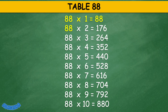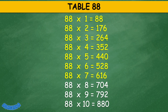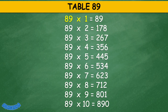Table 88: 88 times 1 equals 88, 88 times 2 equals 176, 88 times 3 equals 264, 88 times 4 equals 352, 88 times 5 equals 440, 88 times 6 equals 528, 88 times 7 equals 616, 88 times 8 equals 704, 88 times 9 equals 792, 88 times 10 equals 880.